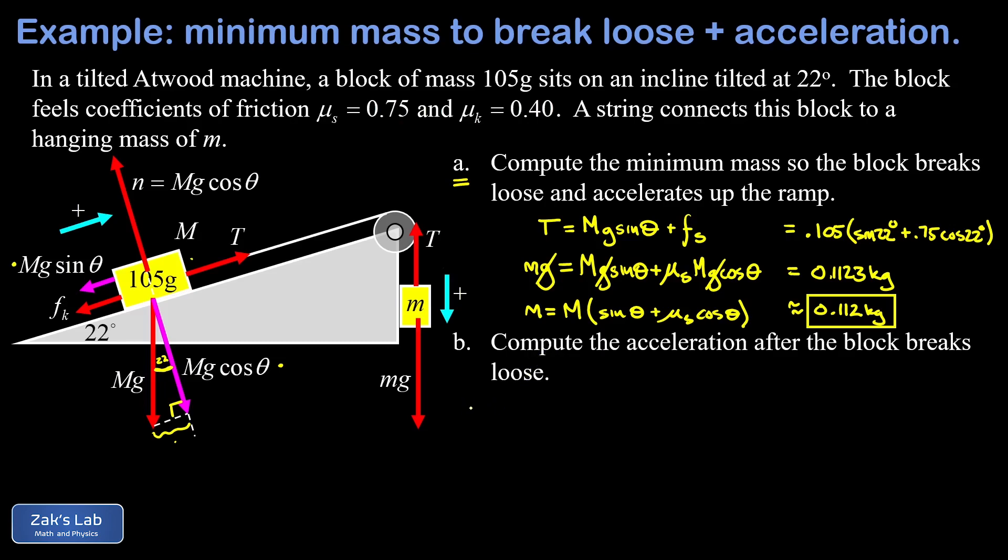So first we'll apply Newton's second law to the 105 gram block, and that's F net equals ma, and we take as our positive direction the direction up the ramp. So T is going to be a positive force, and then we have minus big mg sine theta, and then minus our kinetic friction force that points down the ramp. There's the net force, and that's equal to the size of this particular mass, big m times its acceleration.